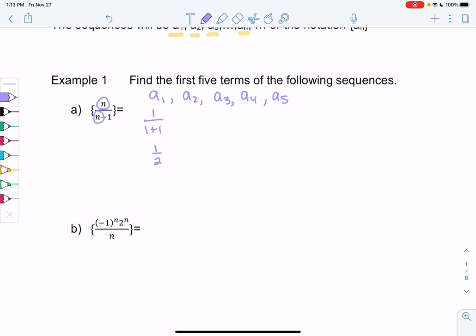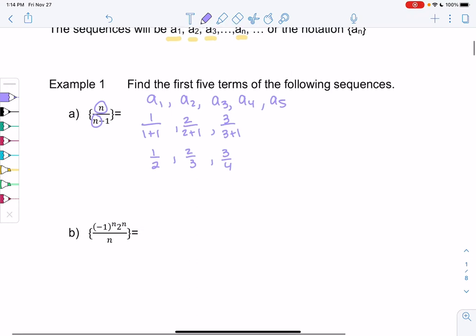a2, same idea. It would be 2 over 2 plus 1, or 2 thirds. 3 over 3 plus 1, or 3 fourths. And then 4 over 4 plus 1, and 5 over 5 plus 1. So we'll get 4 fifths and 5 sixths. And those would be my first five terms of the sequence. It's just a list of numbers.